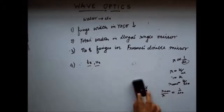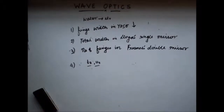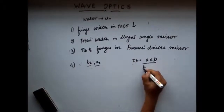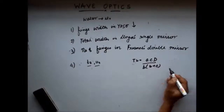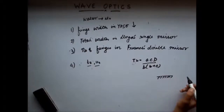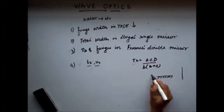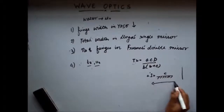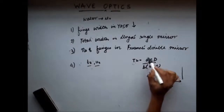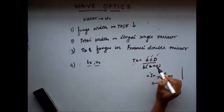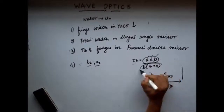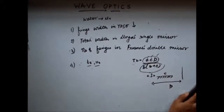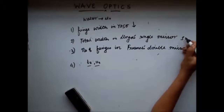Now let's see the effect on the total width in Lloyd's single mirror. The total width in Lloyd's single mirror is given by a·c·d divided by b·(b + c). The distances a, b, c, and d are all geometrical distances. None of these distances have any correlation with refractive index. So the total width in the case of Lloyd's single mirror remains the same.